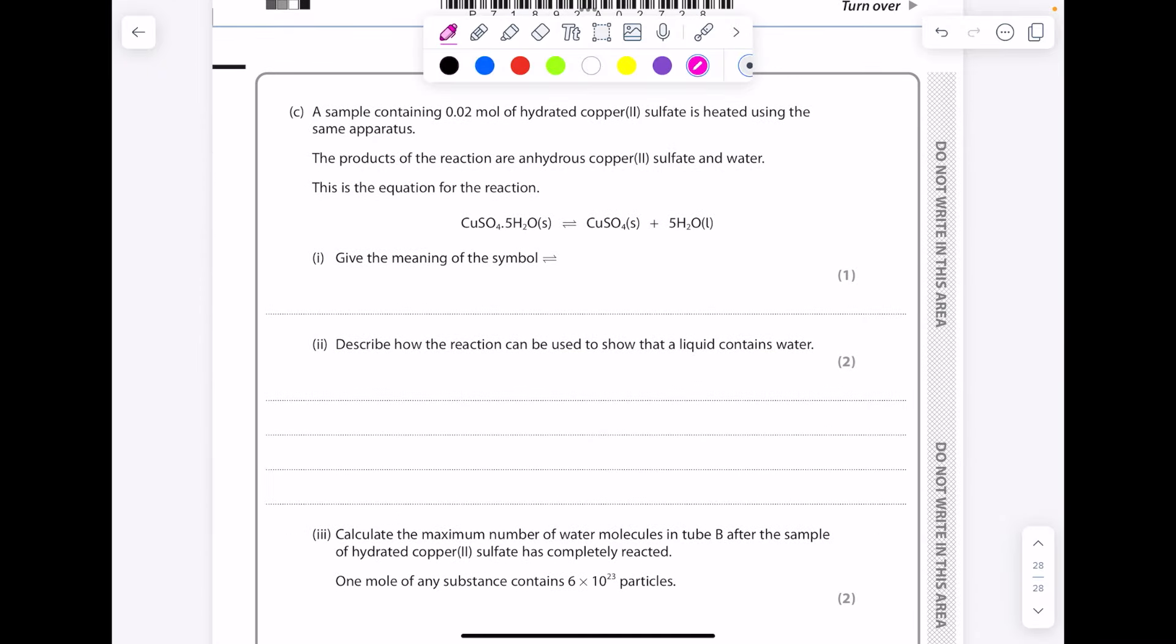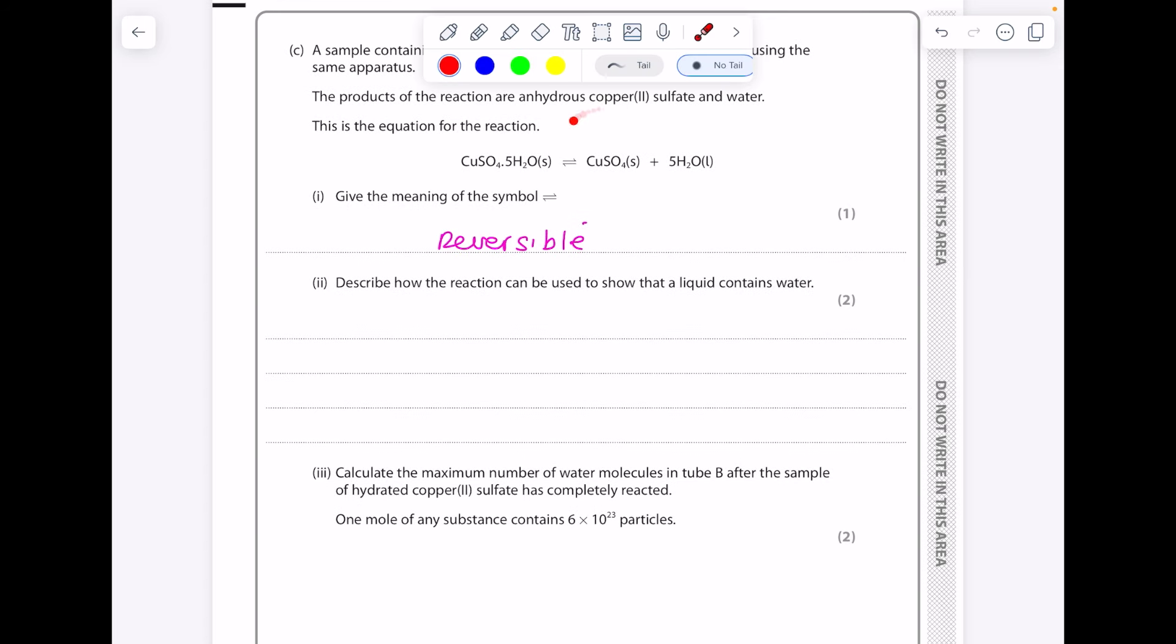The sample containing 0.02 mole of hydrated copper sulfate is heated using the same apparatus. The products in the reaction are anhydrous copper(II) sulfate and water. Give the meaning of this symbol. It means that the reaction is reversible. Describe how the reaction can be used to show that a liquid contains water. This is the test for water. Remember, white anhydrous copper sulfate turns blue in the presence of water. So that's what you need to point out. Add water to white anhydrous copper sulfate, it should turn blue.